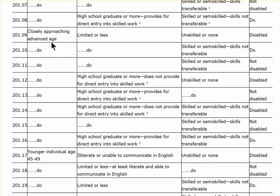The center column is asking what your education level is. Here they give examples: 'limited or less,' then 'high school graduate or more — does not provide for direct entry into skilled work,' and 'high school graduate or more — provides for direct entry into skilled work.'